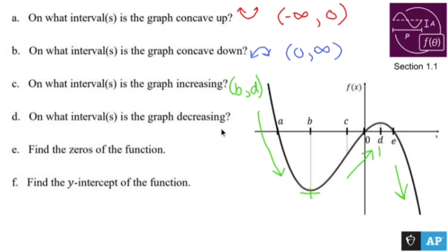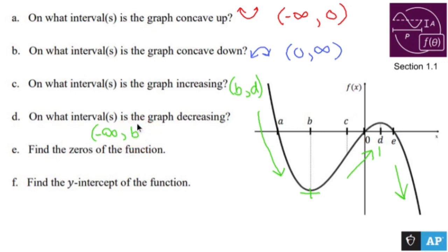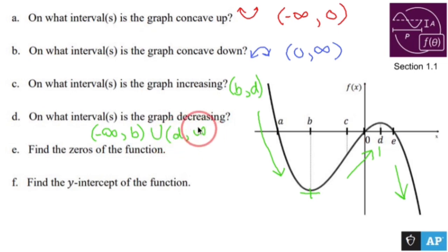On what intervals is the graph decreasing? Well, we already answered that. From negative infinity to B, and then from D to positive infinity. We're not going to include those endpoints. Since there are two intervals, we say negative infinity to B — don't include it — and this symbol means union, which is when you have more than one interval — and then it's also decreasing from D to positive infinity.